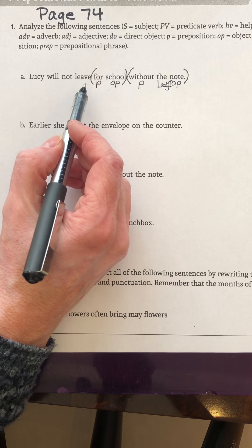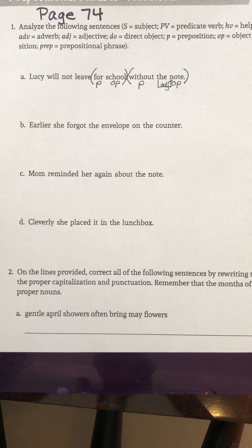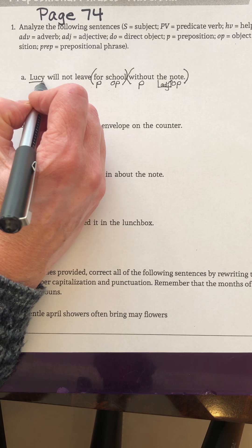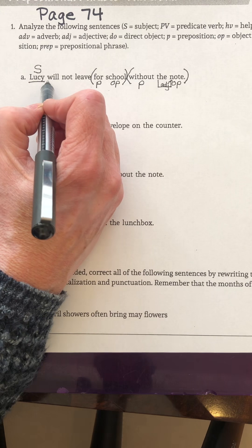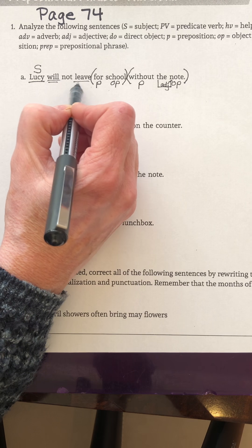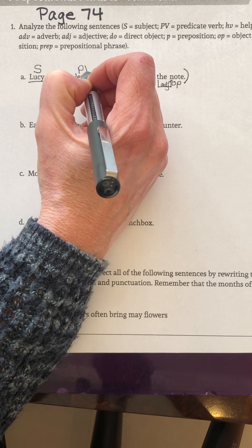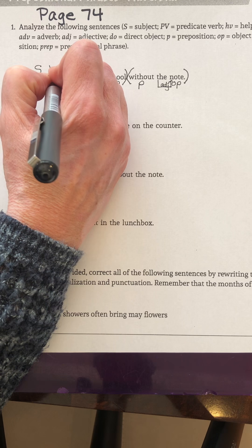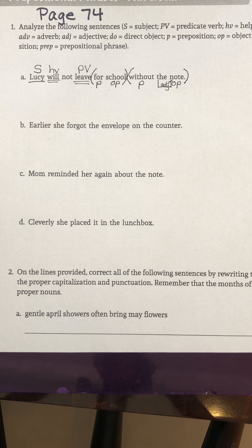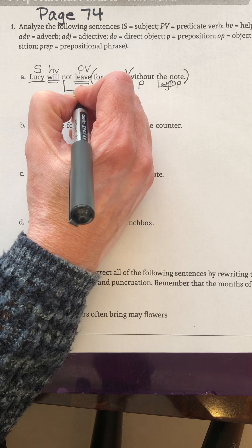Lucy will not leave for school without the note. This is a sentence and it is declarative. This sentence is about Lucy, so Lucy is the subject. This sentence tells us that Lucy will leave, so will leave is the predicate. Leave is the predicate verb because it shows action. Will is the helping verb because it helps the verb — will leave. How? Not. Adverb because it modifies the verb.